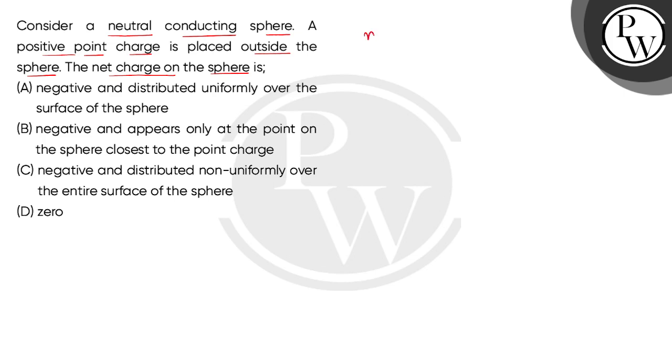So boys, first of all, we have given a question: a conducting sphere which is neutral. So this is a neutral conducting sphere. Now boys, what does this mean? This sphere is made from metal and neutral means that the initial charge is zero. Now, let's understand this in the figure. This is the neutral conducting sphere, so initially there are zero charges.